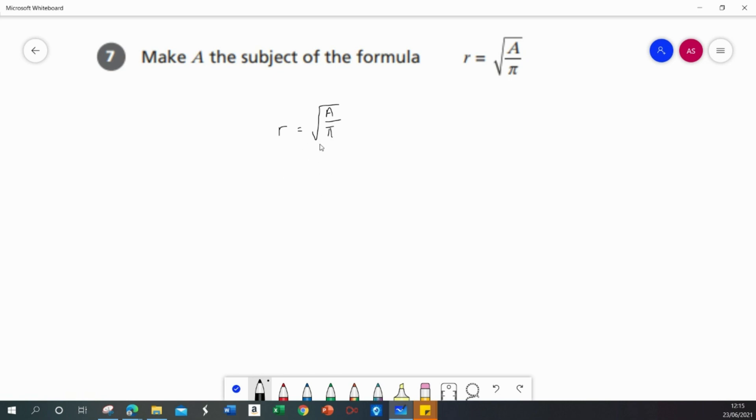First of all, the inverse of a square root is to square, and so I'm going to square both sides. That's going to give me r squared equals a over pi.